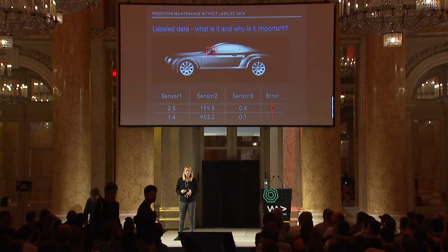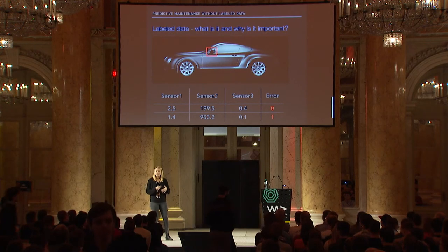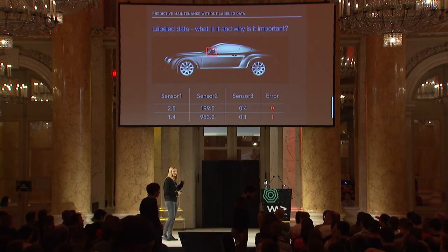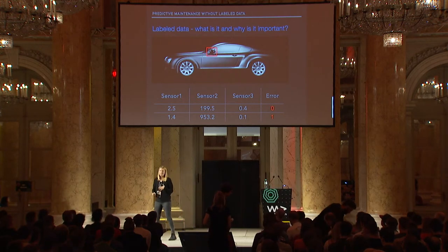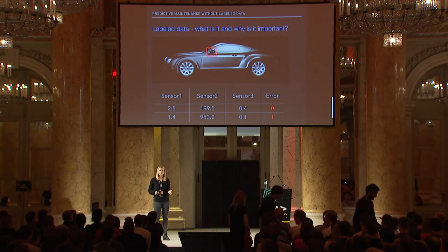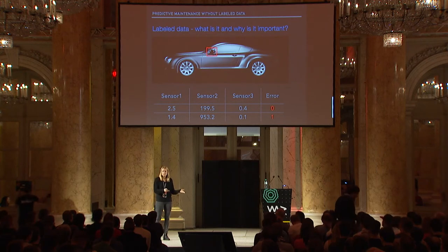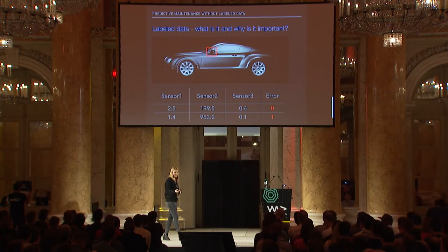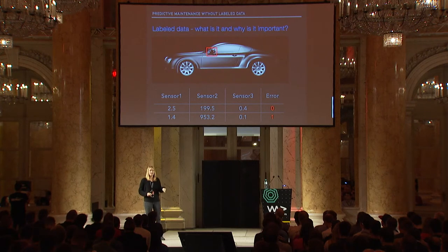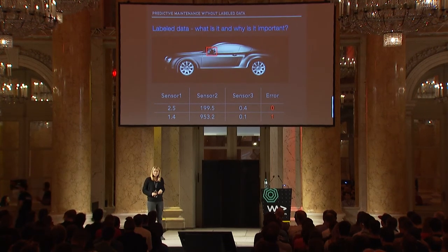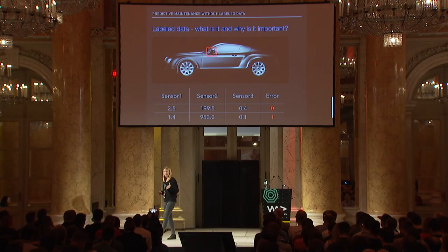You can also label data in log files. Imagine you have a machine with lots of sensors — maybe an IoT device — and each sensor logs numbers. You want to find out when your machine breaks. To do that with supervised machine learning, you need to give the algorithm information about when the machine is broken and when it's functioning — for example, an error column where each row is zero for working or one for an error.